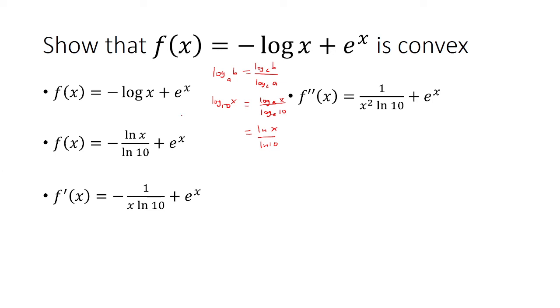Note that e to the x is always positive. It looks like this. And then 1 over x squared times ln of 10, that's always going to be positive because anything you square is positive.